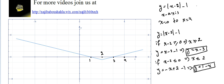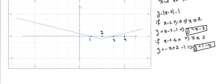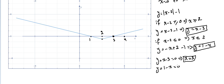Now, where do these functions intersect the x-axis? For y equal x minus 3 set to 0, we get x equal 3. This piece is drawn for x greater or equal to 2, so we plot from x equals 2 onward. For y equal 1 minus x set to 0, we get x equal 1. This piece applies where x is less than or equal to 2, so it intersects the x-axis at x equal 1.